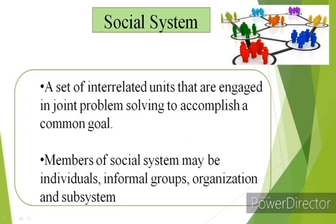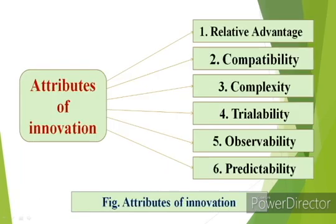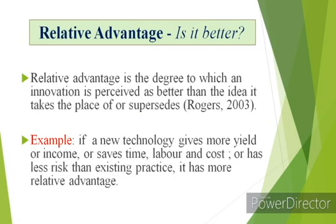Members of a social system may be individuals, informal groups, organizations, and subsystems. Proceeding to the next point — attributes of innovation — there are six attributes in total: first, relative advantage; second, compatibility; third, complexity; fourth, trialability; fifth, observability; and sixth, predictability.